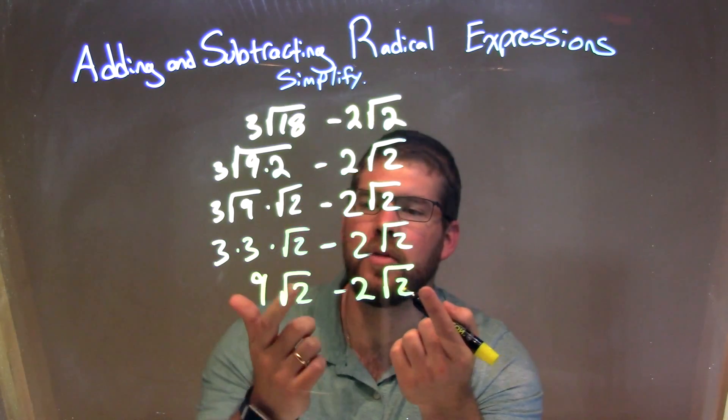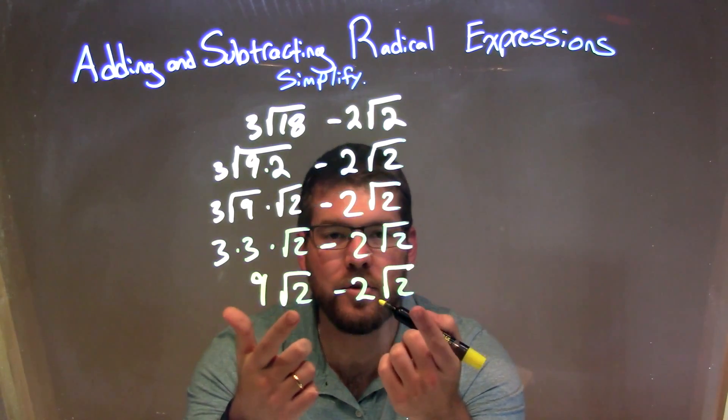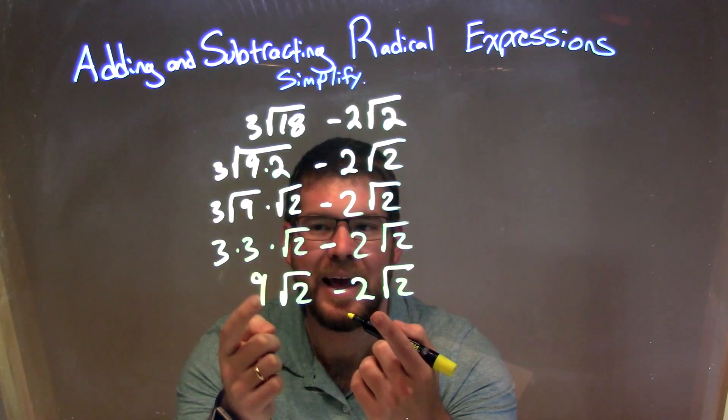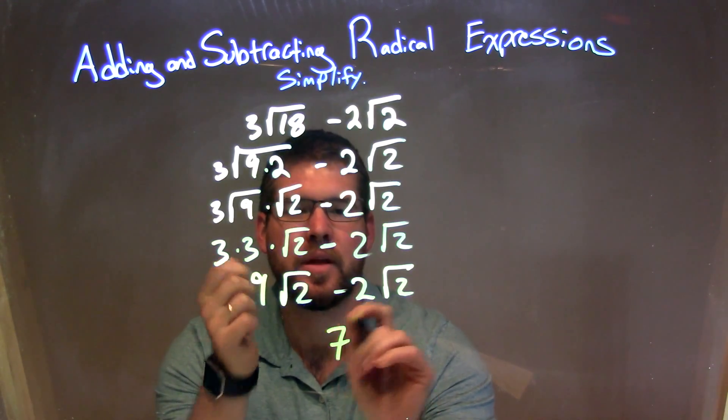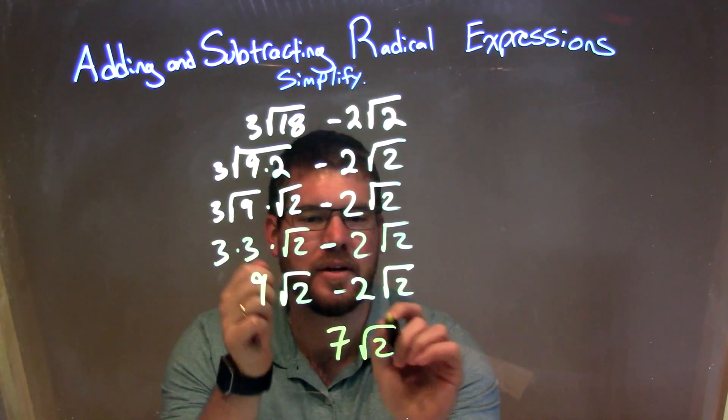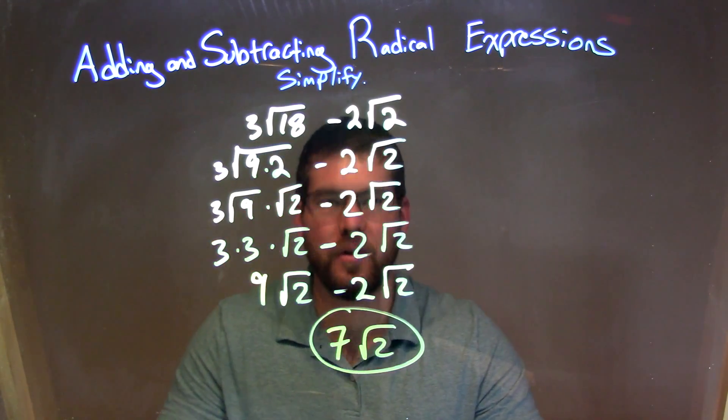So now we look, since both terms have the square root of 2 right there, we look to what's in front of it, the 9 and the 2. 9 minus 2 is a 7, and then we can just bring down the square root of 2 to give me my final answer here of 7 square root of 2.